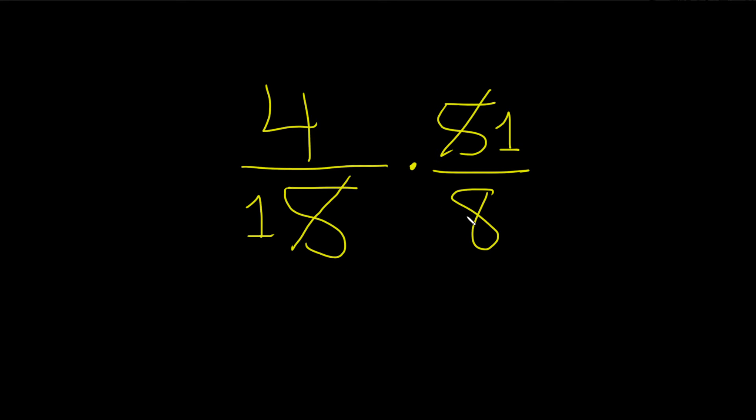And then the 4 and the 8, same thing, we have some cancellation here. You put a line through the 4 and put a 1 here because 4 goes into 4 one time. Then you do the same thing here, put a line through the 8 and put a 2 here because 4 goes into 8 two times.